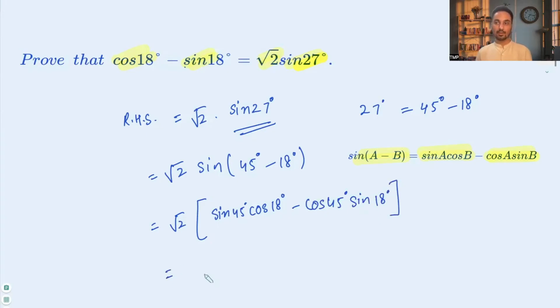And sin 45 degrees is 1 over square root 2 times cos 18 degrees, and cos 45 is also 1 over square root 2 times sin 18 degrees. So here we can take out 1 over square root 2 common and cancel it out.